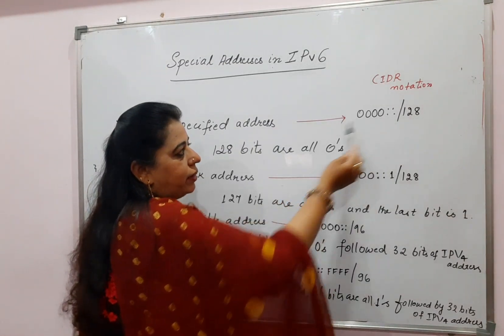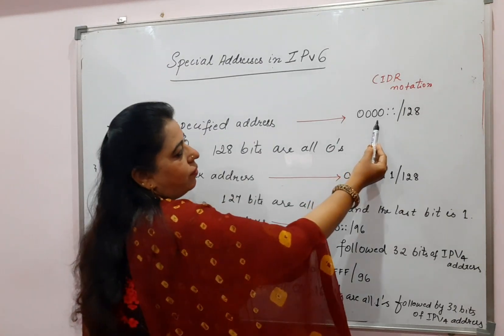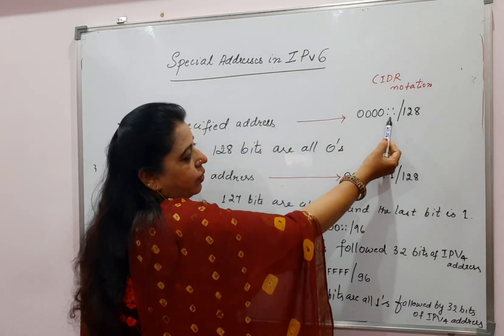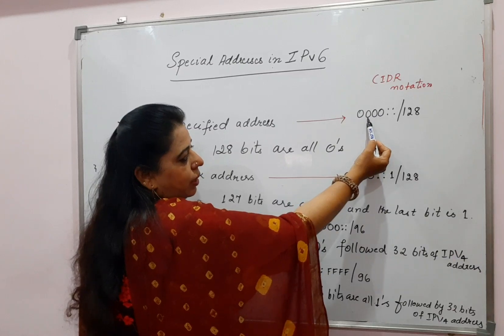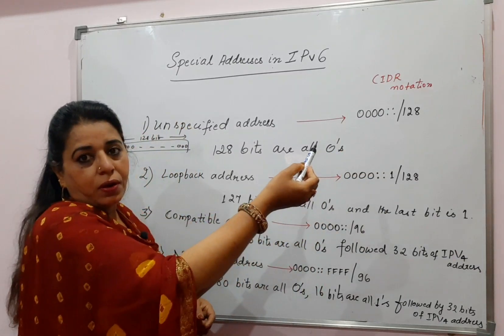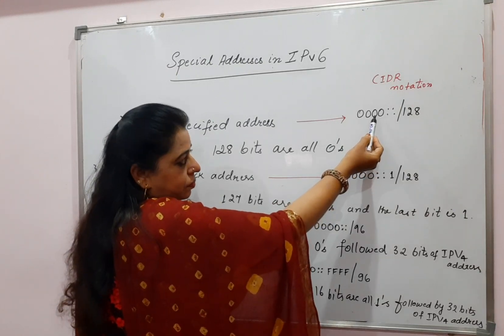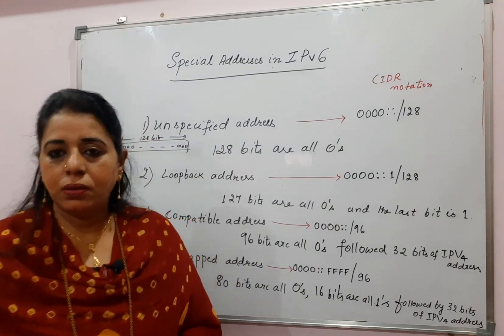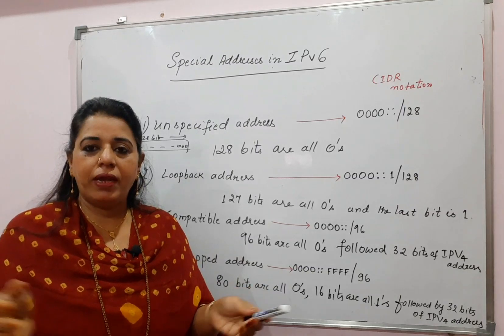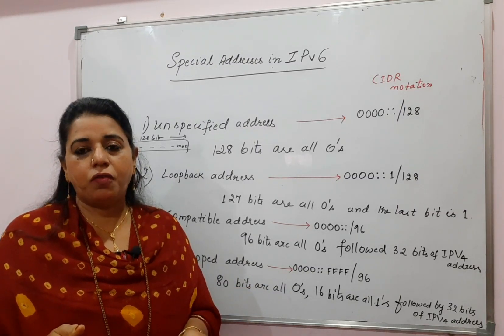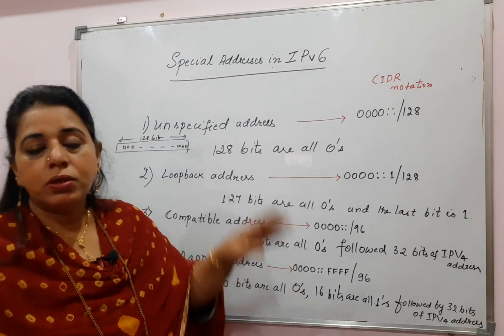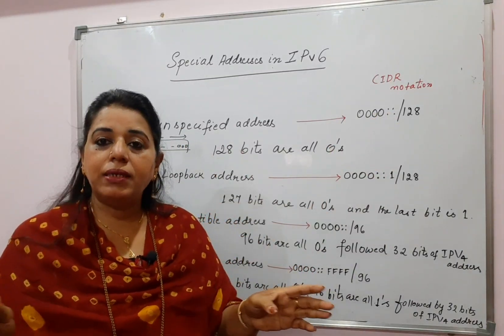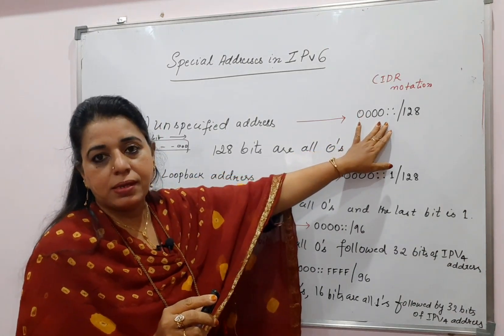You should also learn how to write the CIDR notation for each of the special addresses. For the unspecified address, since you have 128 bits, it is slash 128, and all the hexadecimal numbers are zero. You start writing with double colon, where double colon indicates the remaining bits are also zeros. The 128 bits are divided into eight sections separated by colons, each section consisting of four hexadecimal numbers. The CIDR notation is indicated in this manner.